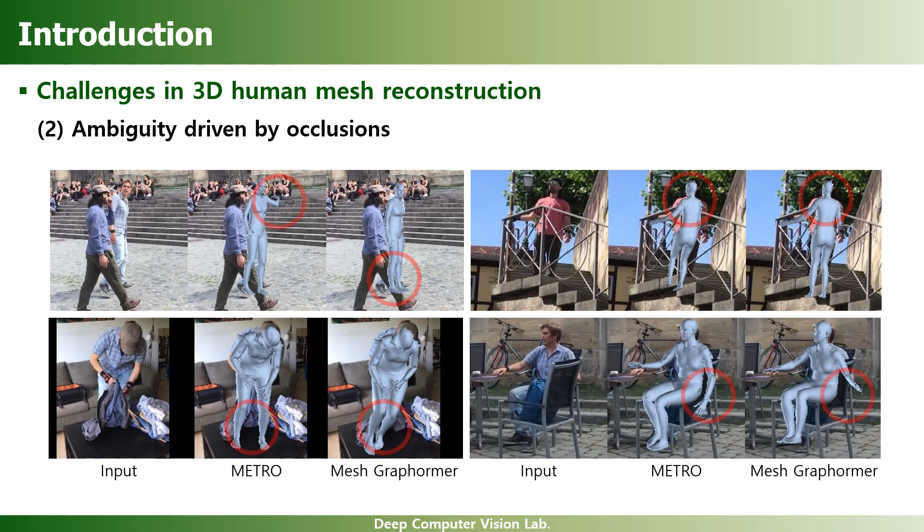Secondly, occlusion is one of the most important problems in this field. To alleviate the ambiguity driven by occlusions, we make the network effectively learn the local relationships between each vertex by using the proposed progressive attention masking.